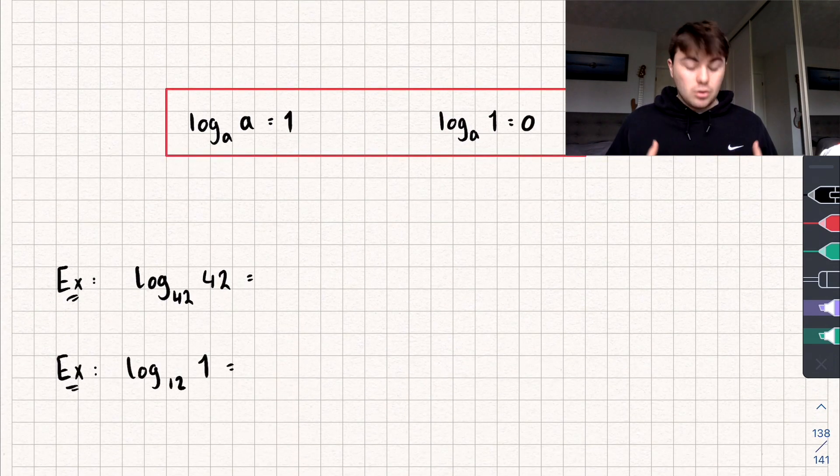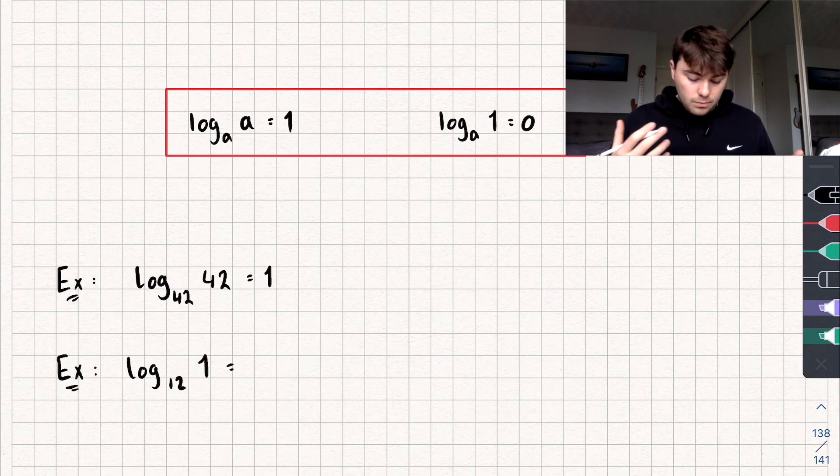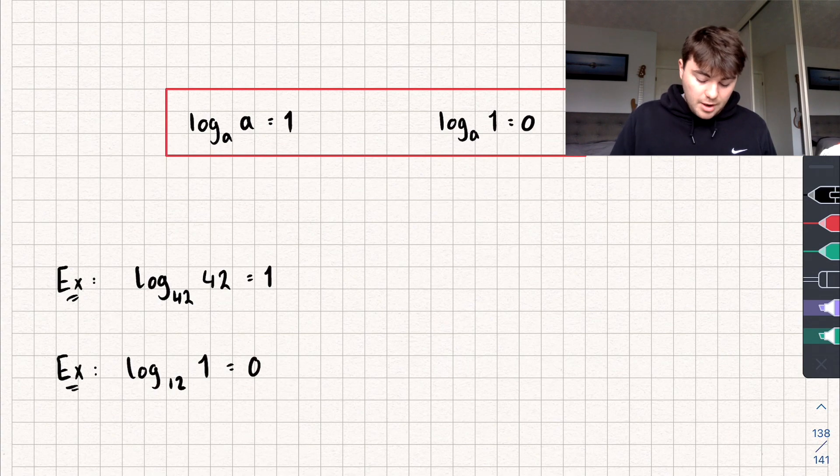We can use these new facts to answer these two questions below. If we're looking for the logarithm of 42 in base 42, well that's just going to be one because 42 to the power of one is 42. And the logarithm of one base 12, well that's going to be zero because 12 to the power of zero is one.